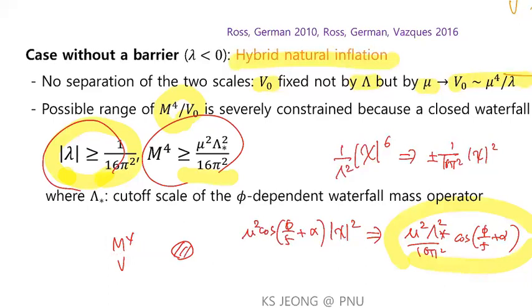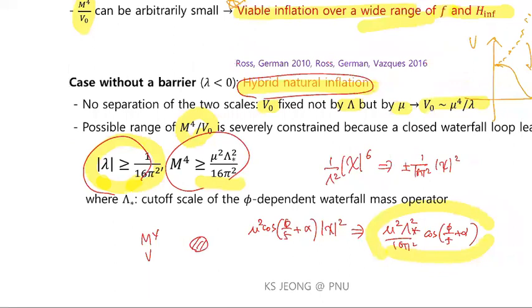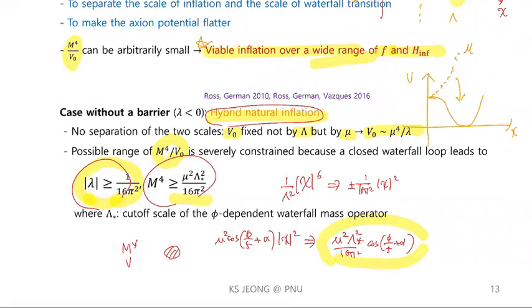In addition, in hybrid natural inflation the required decay constant is below the Planck scale, but not much below the Planck scale compared to our scenario. Also, the model required many fields to implement the waterfall transition. However, in our scenario we use an axion-dependent mass for the waterfall field, which makes the model quite simple compared to hybrid natural inflation.